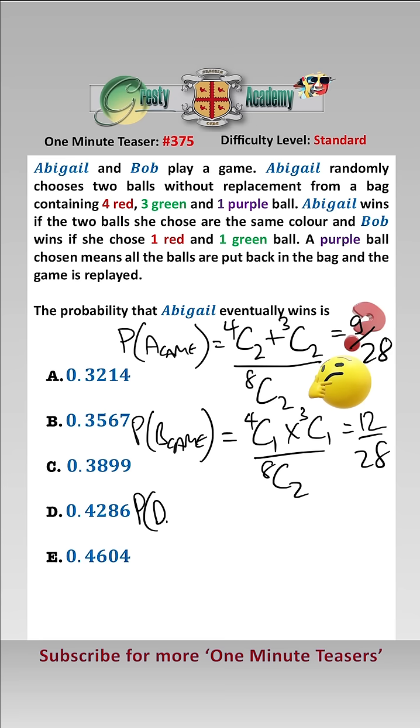And the probability of a draw is equal to 1c1, i.e. the purple is picked, times by, it doesn't matter what the other ball is, 7c1 over 8c2, which equals 7 over 28, the draw.